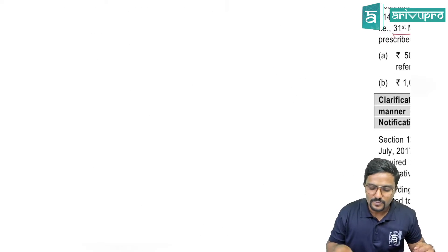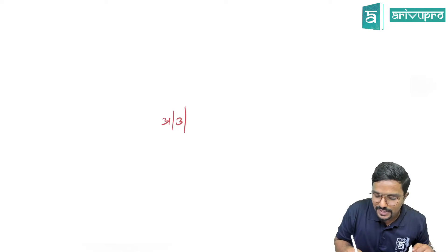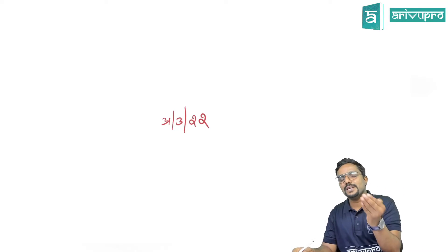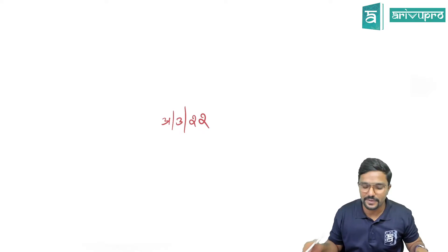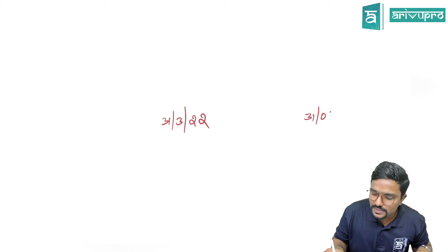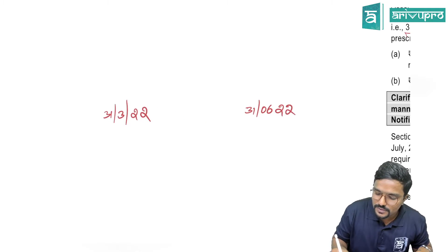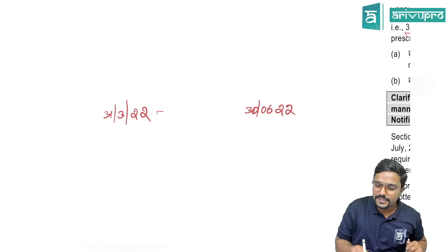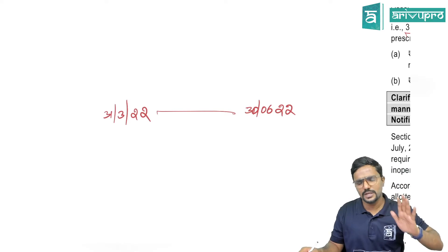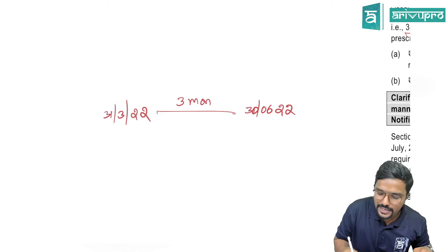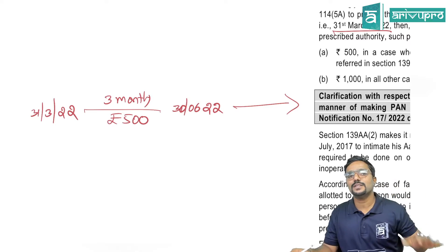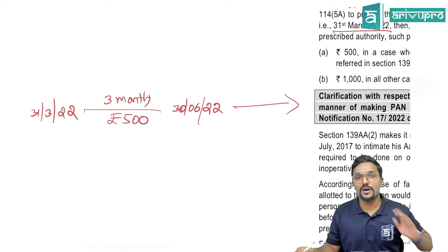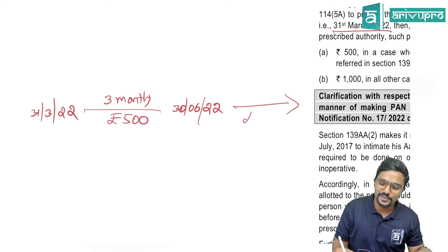So to summarize: maximum due date to link Aadhaar was 31st March 2022. If linked on or before 31st March 2022 — no late fee. If linked within three months, i.e., by 30th June 2022 — late fee of 500 rupees. If linked after 30th June 2022 — late fee of 1,000 rupees. Please be careful because you can expect a question on this in November exam.